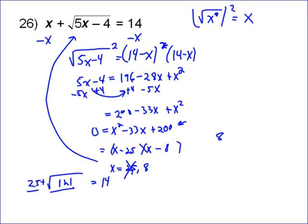We try 8, you're going to have 8 plus the square root of 40 minus 4, which is 36. Well, that does work as an answer. And so the only answer to this problem is 8. Always, always, always check your radical because when you square things, you often introduce what are called extraneous solutions.